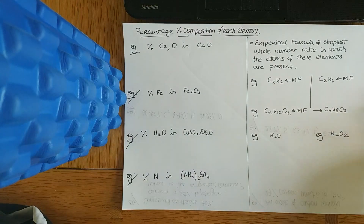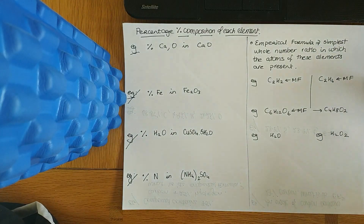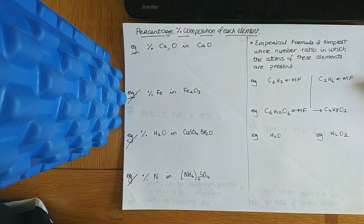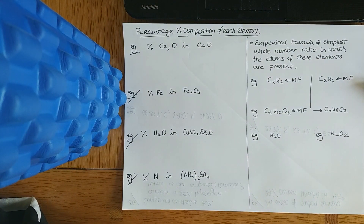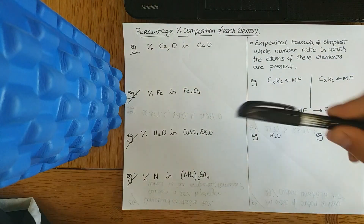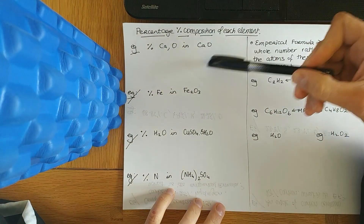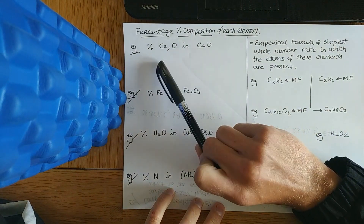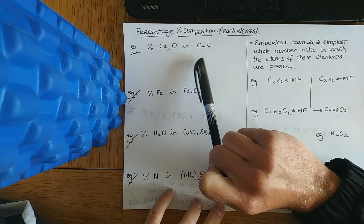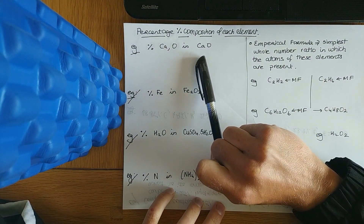We'll quickly go through a few stoichiometry problems here, won't take too long. So the first thing in stoichiometry is working out the percentage of each element, or a certain element, in a compound.